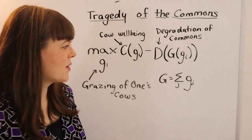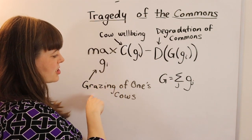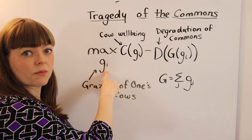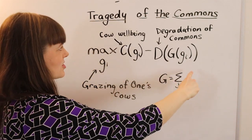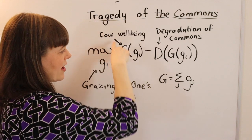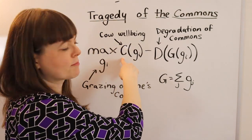So here's the setup. We have each individual in the town deciding how much grazing of one's cows do you allow. That's their choice variable. And their objective function is that they care about their cow's well-being, or maybe they care about milk or something like that.